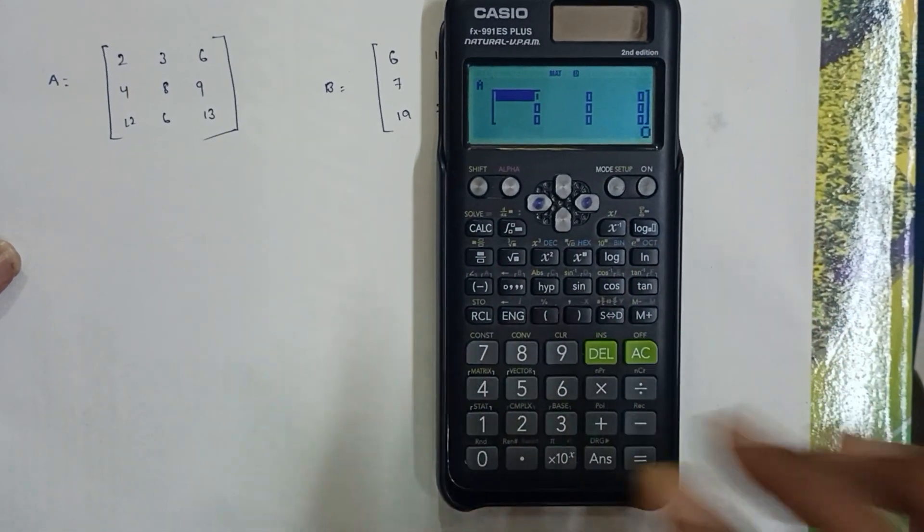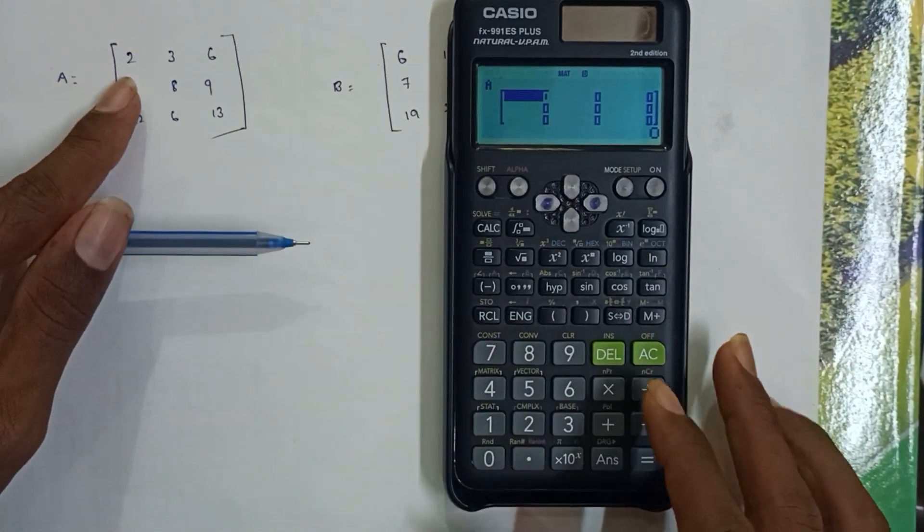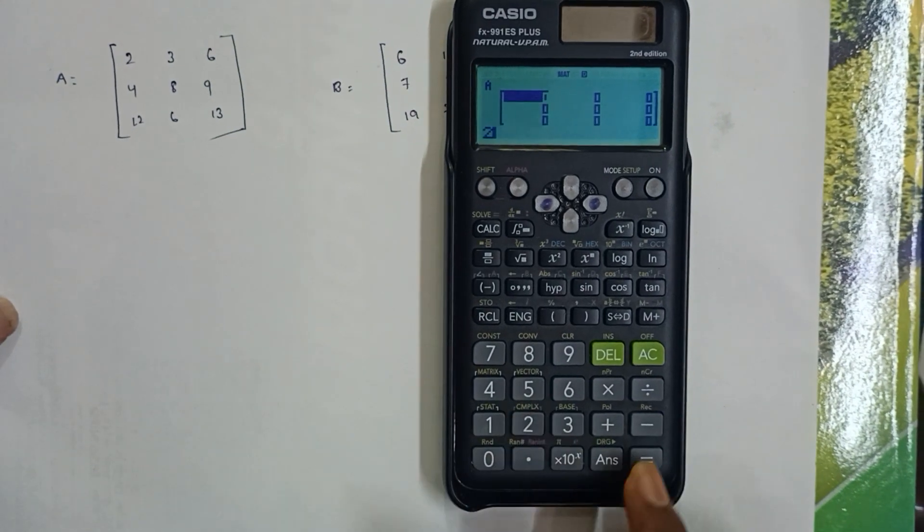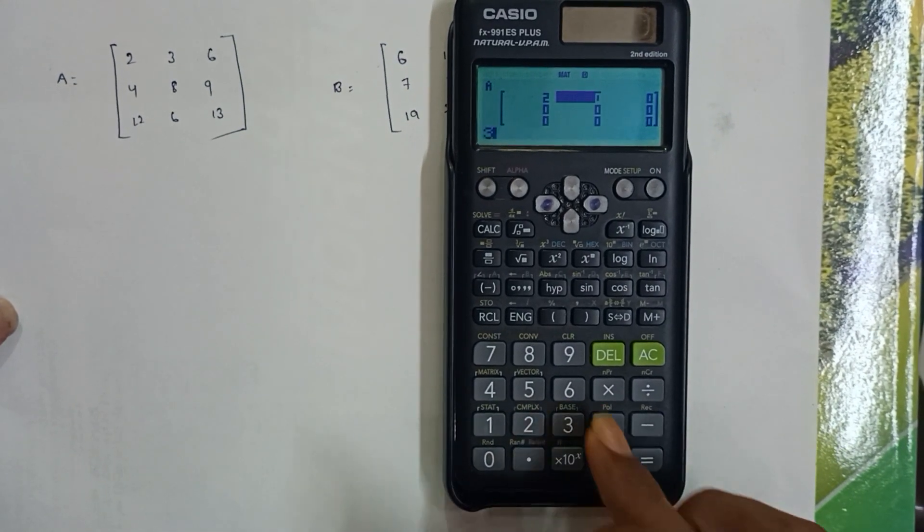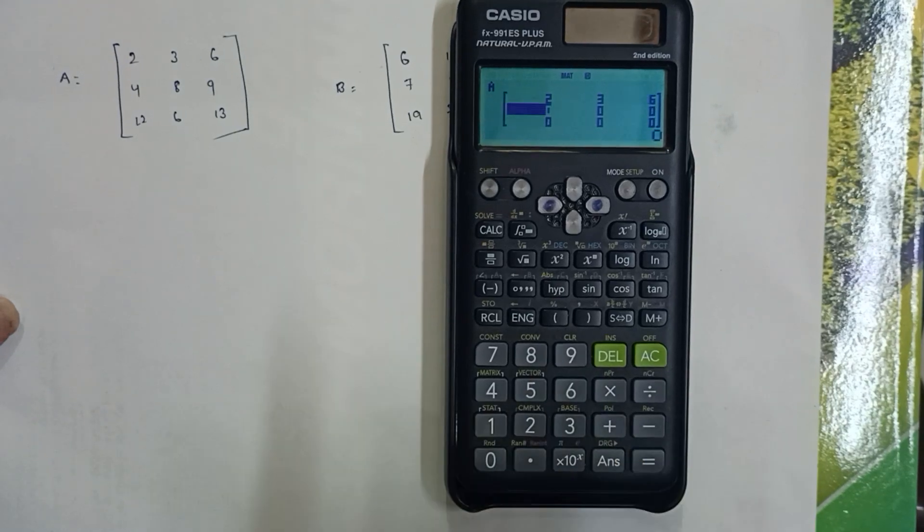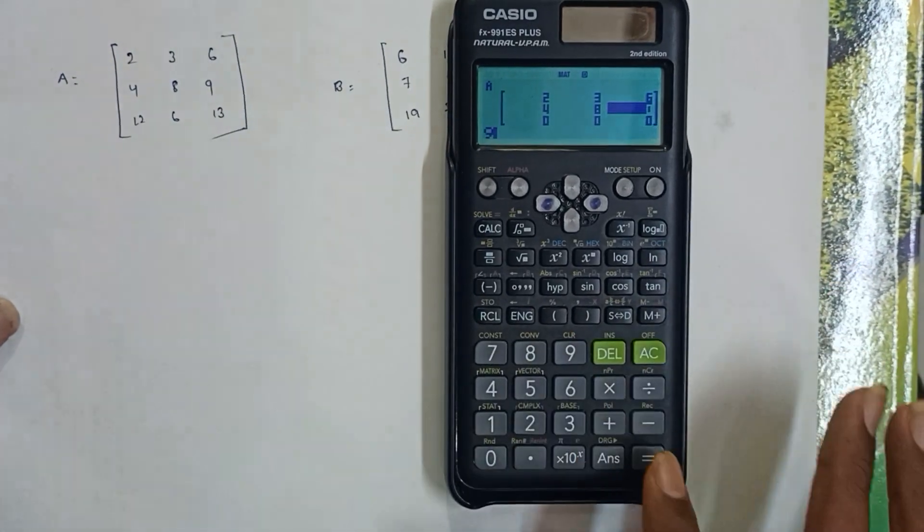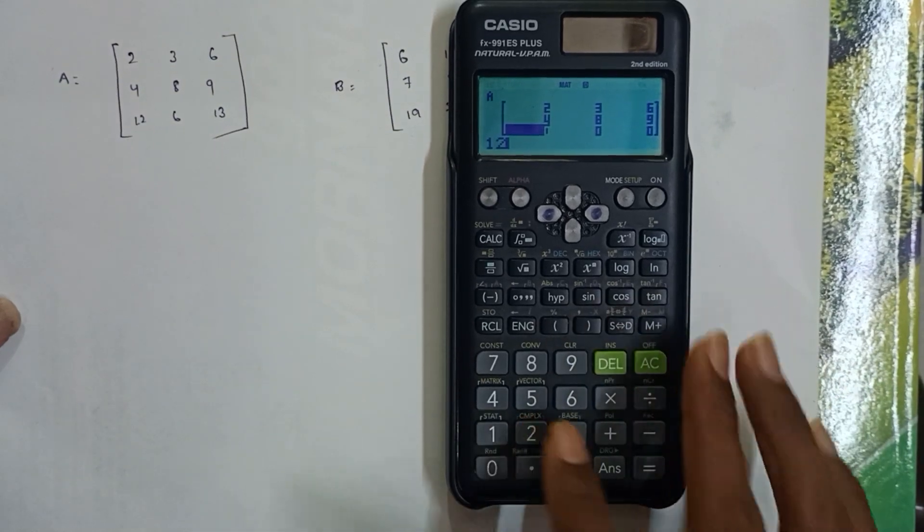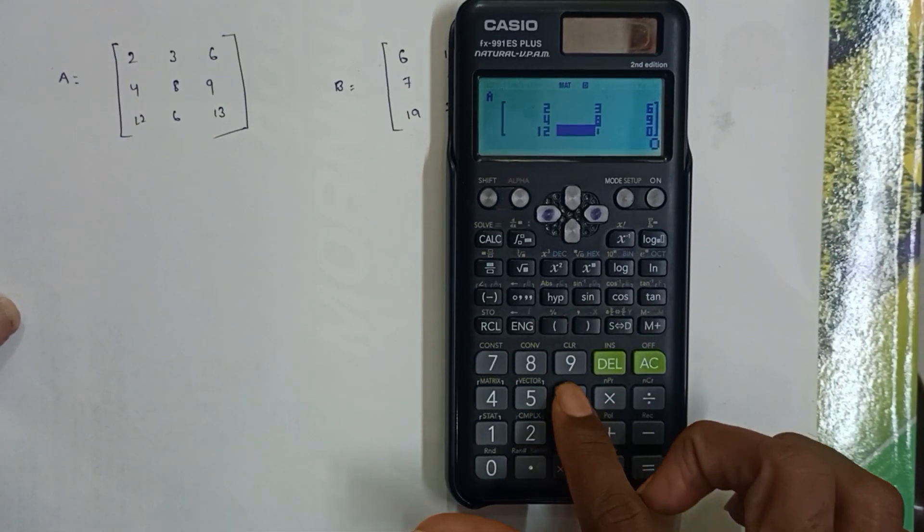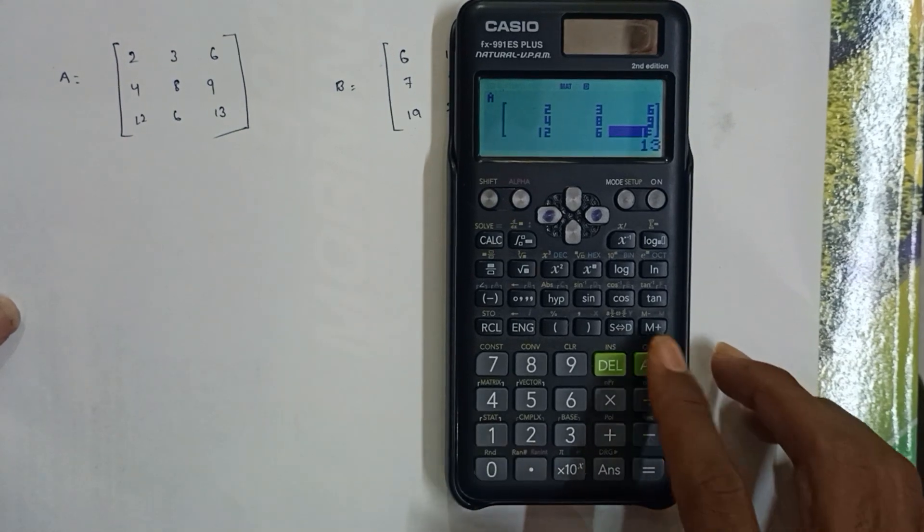Now I'll enter the values for Matrix A. The values are: 2, 3, 6, then 4, 8, 9, then 12, 6, 13. Press equal to save.